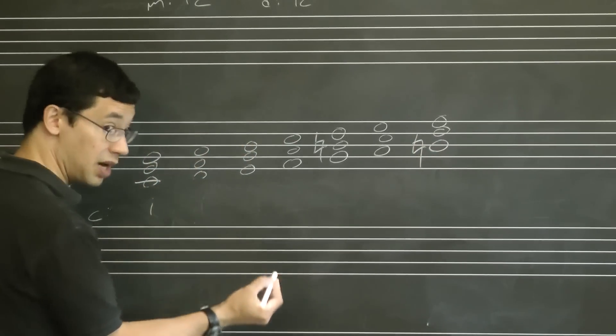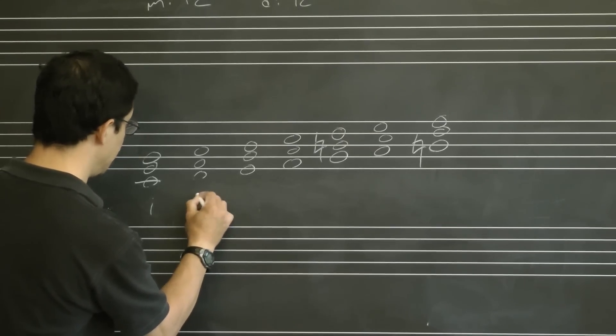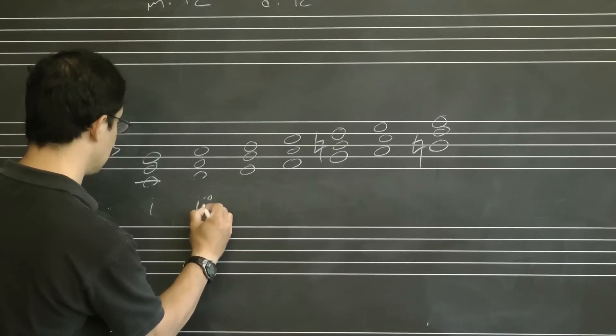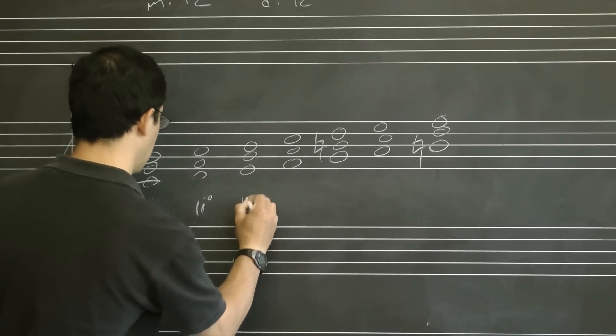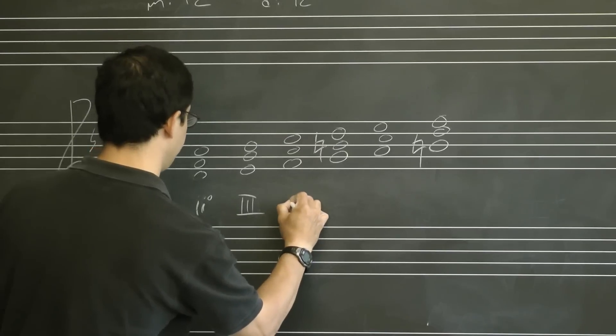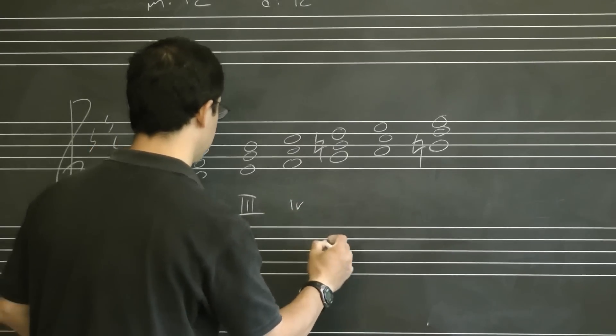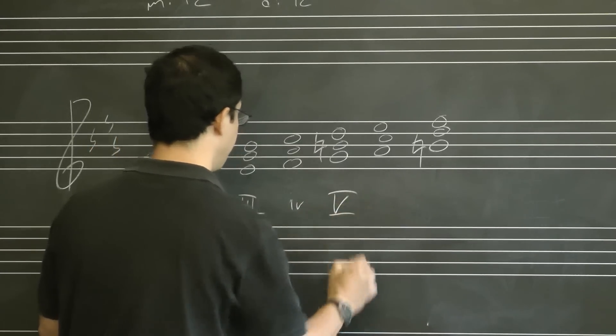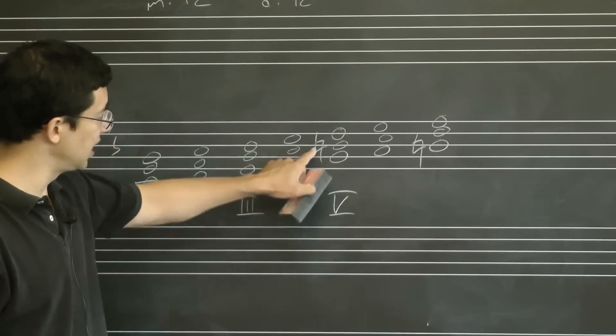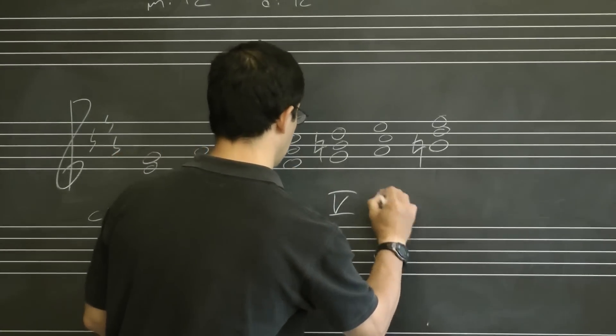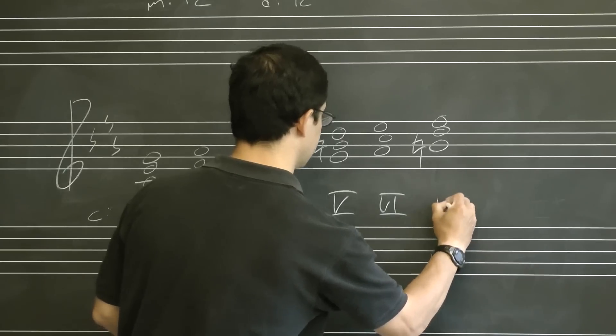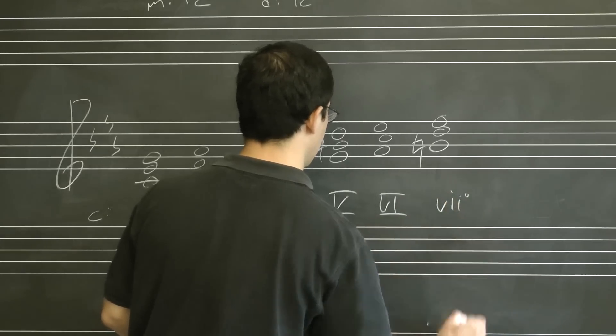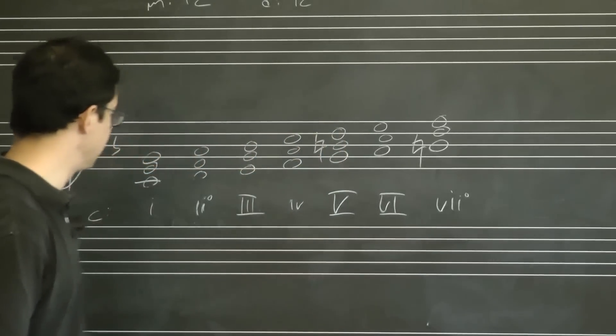I'm going to have one as a minor chord, two now as a diminished chord, three is major, four is minor, five would have been minor in natural minor but instead it's major, six is also major, and as in major, seven is diminished.